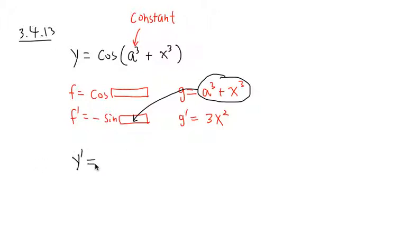So I'm going to write down y prime equals negative sine of this, which is a to the third power plus x to the third power. And we are going to multiply by g prime, which is going to be 3x squared.